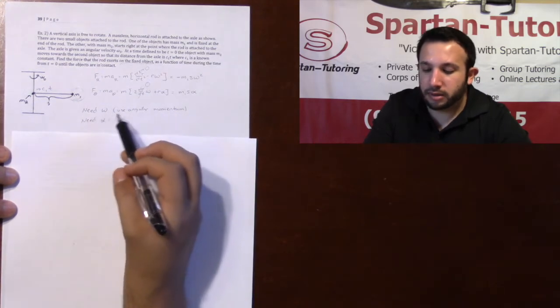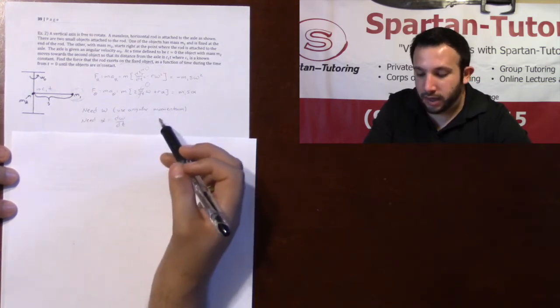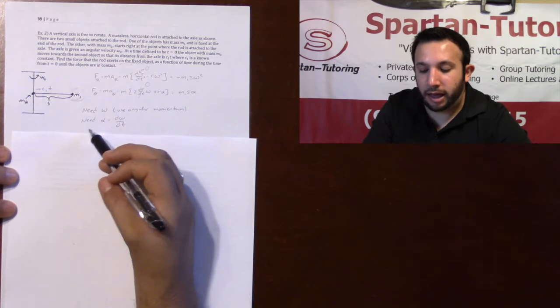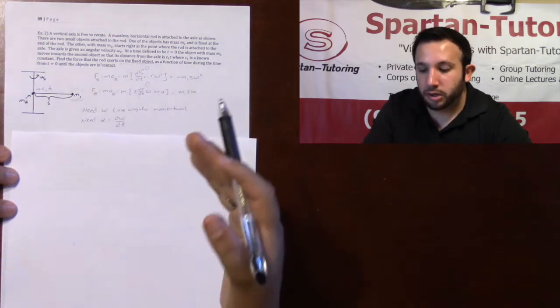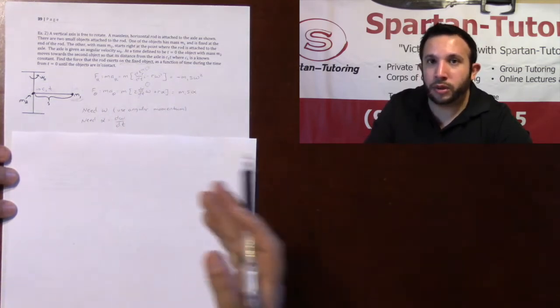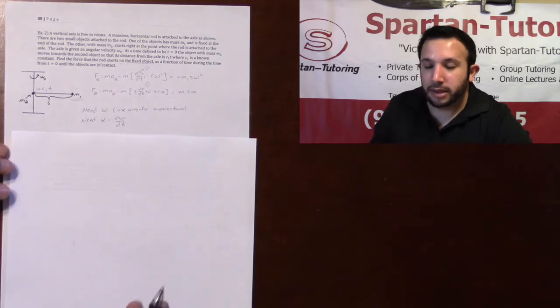So what we need is omega, and we're going to use conservation of angular momentum. And then alpha, of course, is just your derivative of your omega with respect to t.